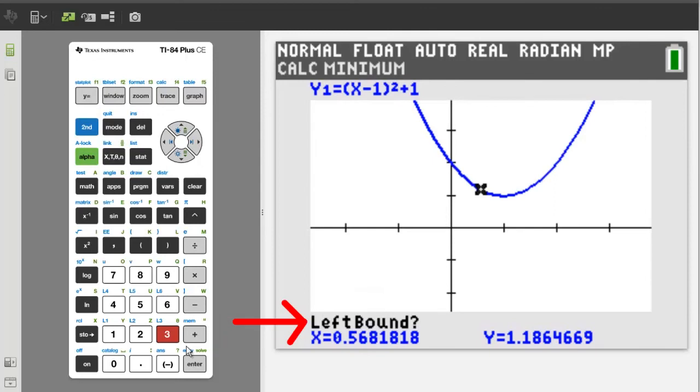It is asking for the left bound. We have to use the arrow buttons to move the blinking cursor just to the left where we think the minimum is. Looking at the graph, I think the vertex is at point. Use the right arrow button to move the cursor down. About right there. That is just left of x equals 1.